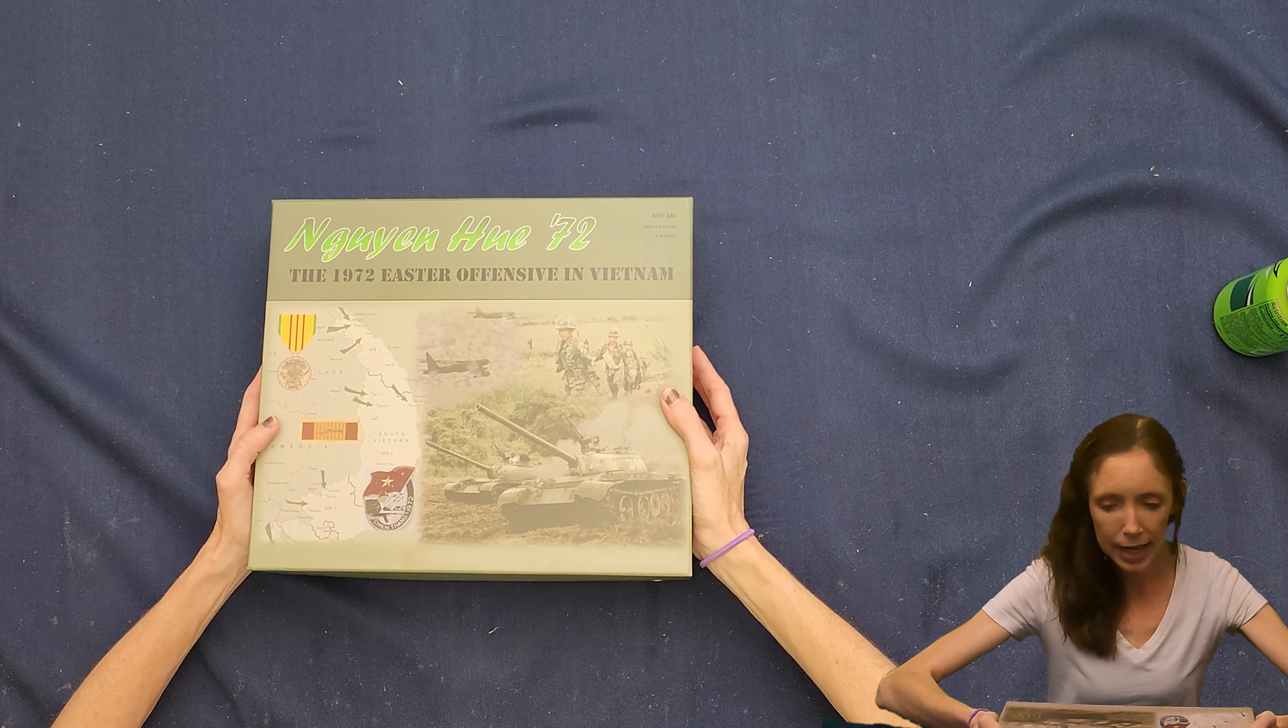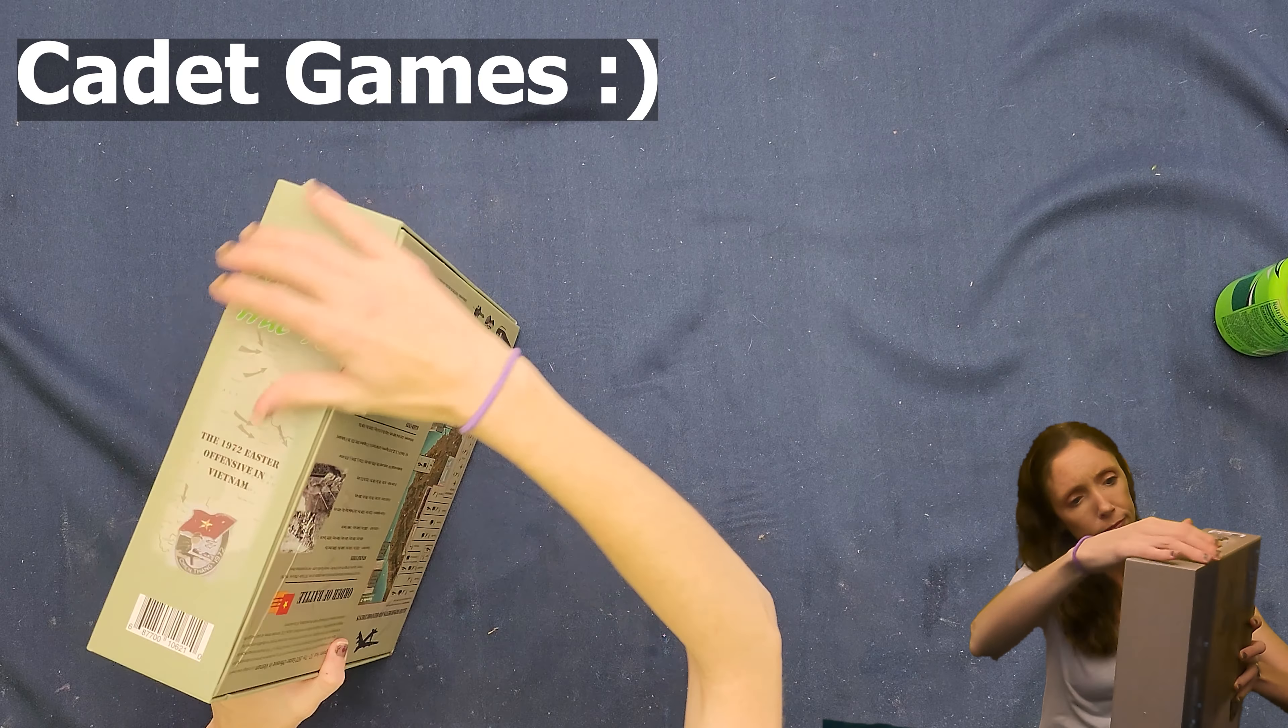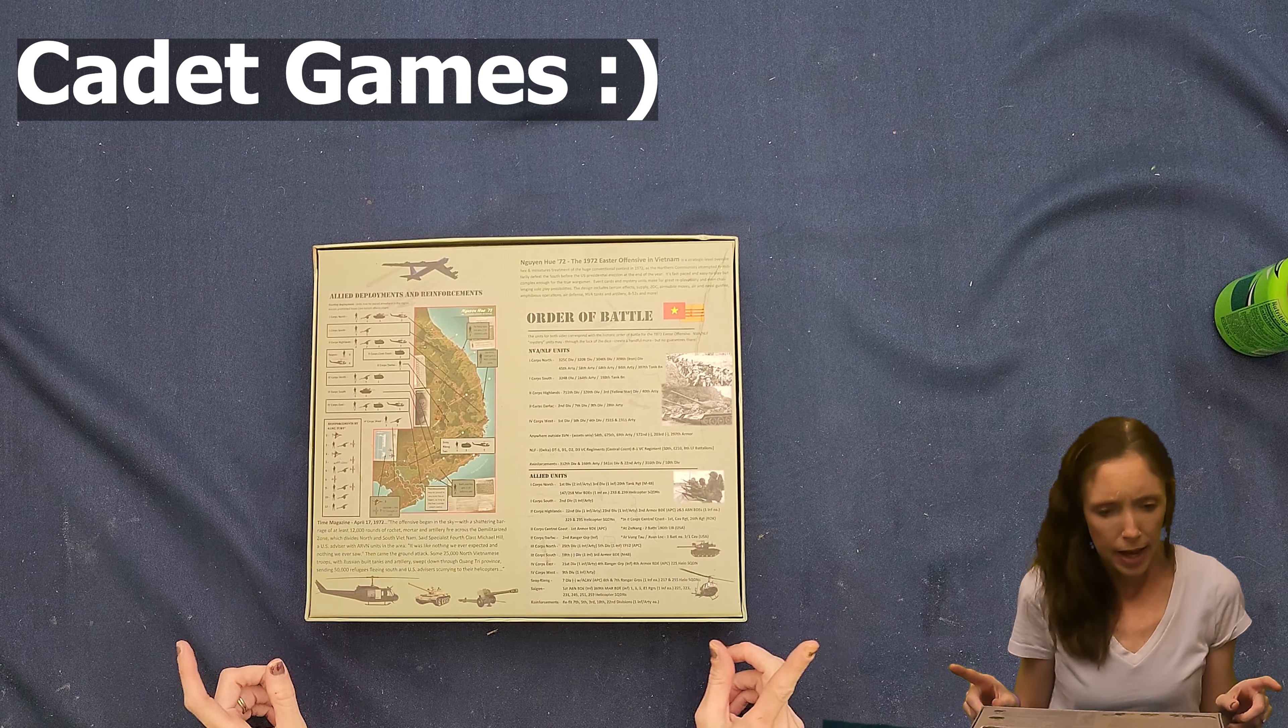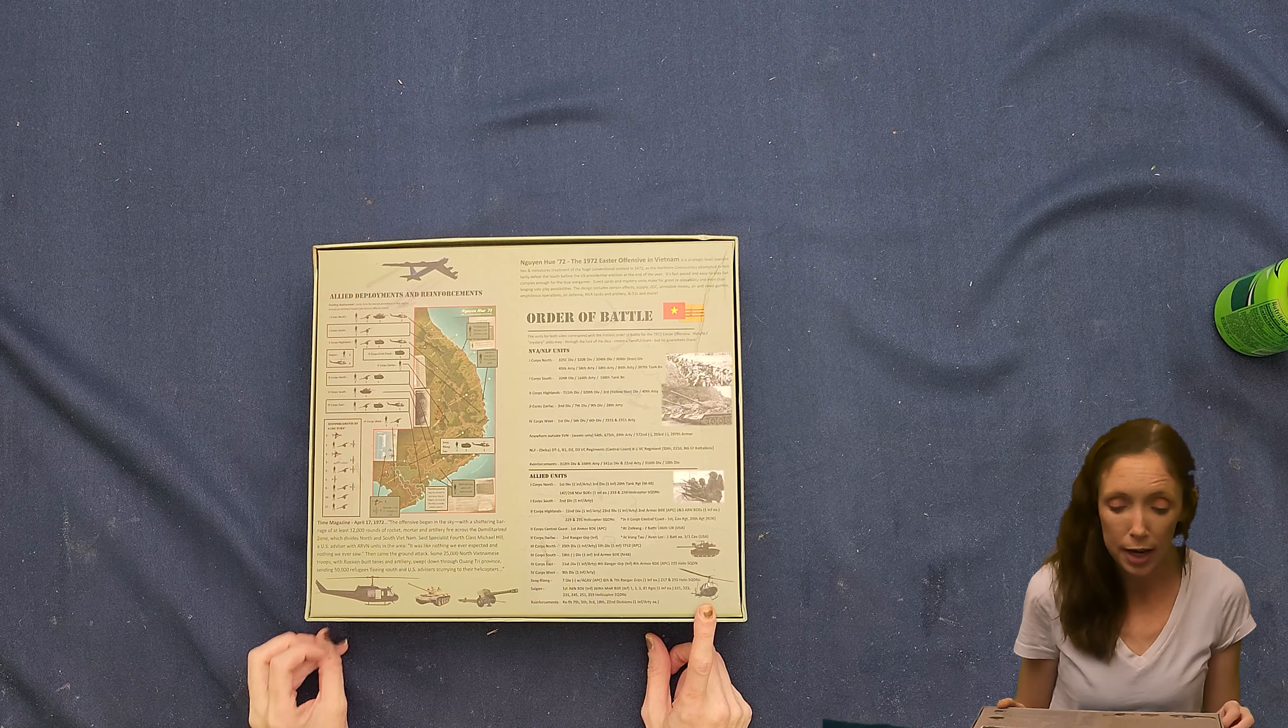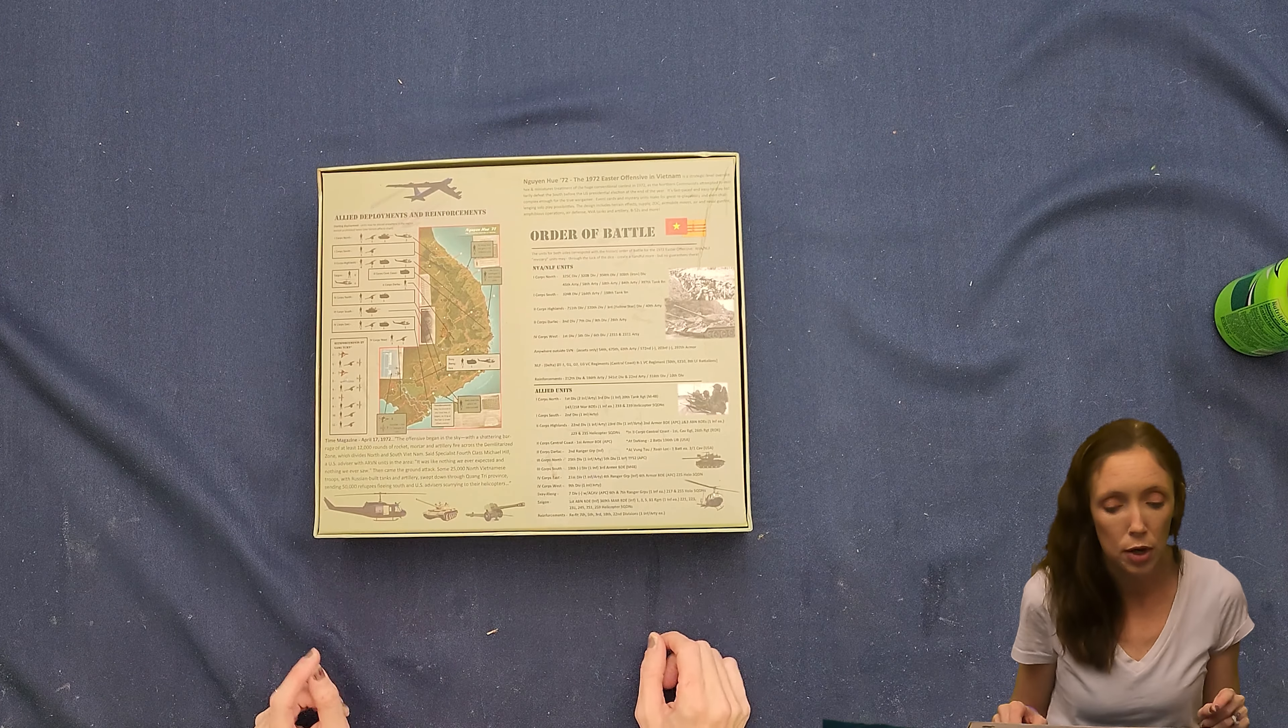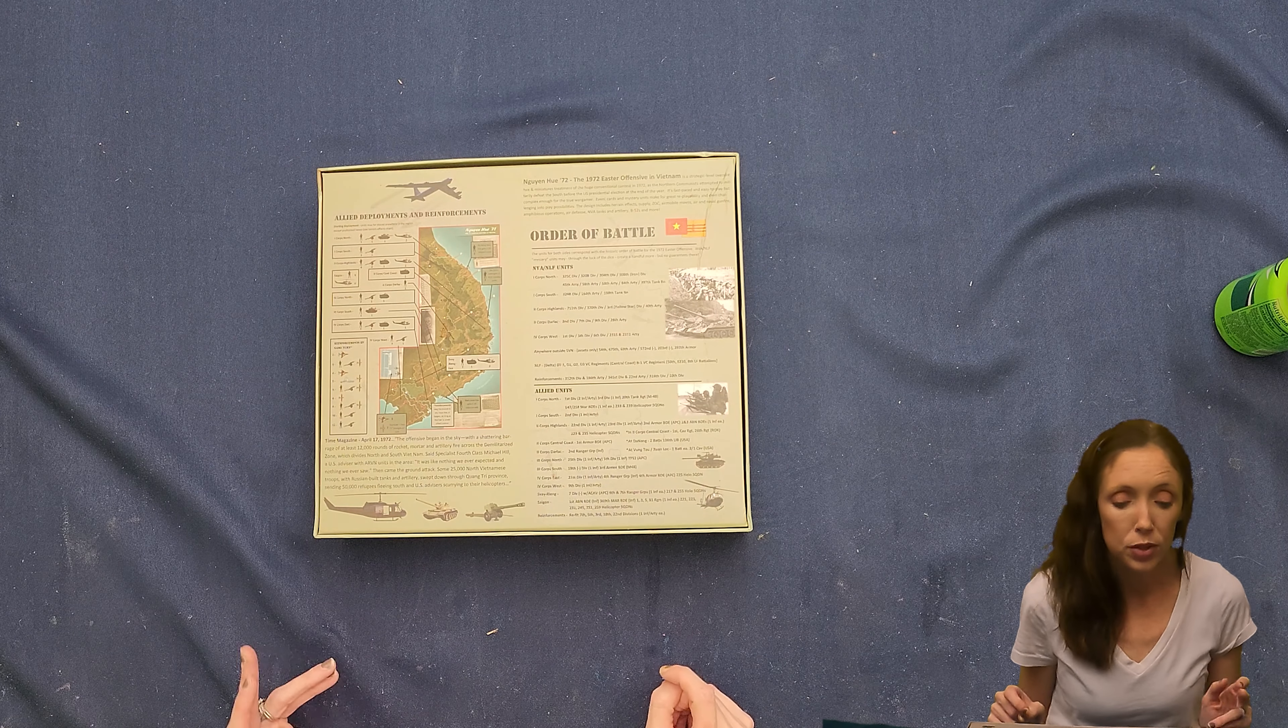So it doesn't say on the front who makes this, but this is the back of the box. We have some looks like example over here. This says the offensive began in the sky with a shattering barrage of at least 12,000 rounds of rocket, mortar, and artillery fire across the demilitarized zone, which divides North and South Vietnam.